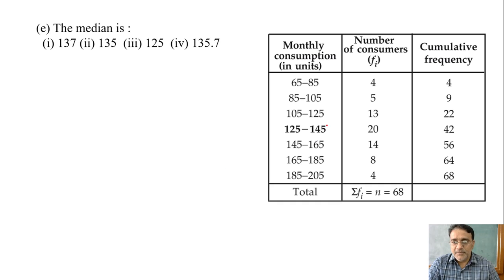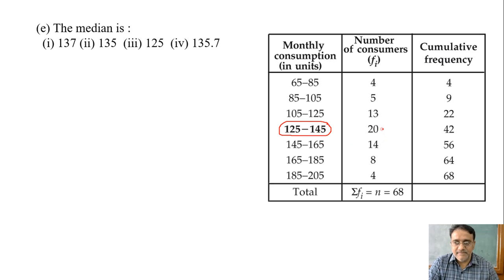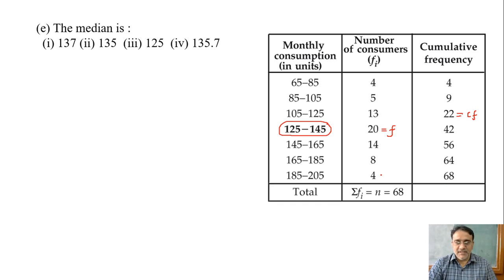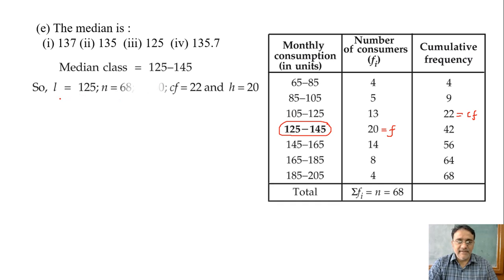Now the last part: we have to find the median. We already have the median class. What is l here? 125. What is f? 20. What is cf? 22. And what is h? 20. The median class is 125 to 145. We will substitute all these values into the formula.